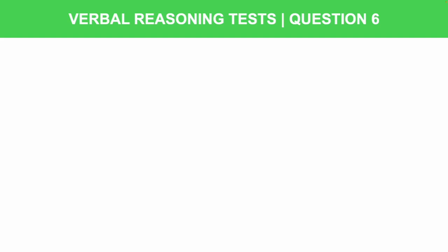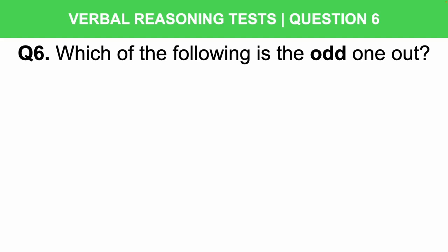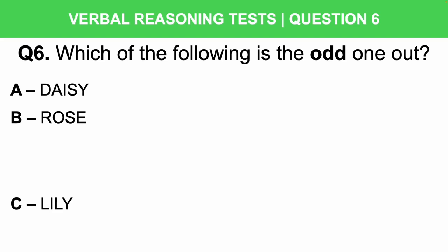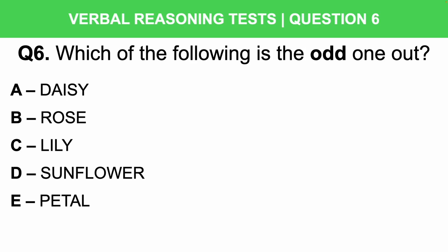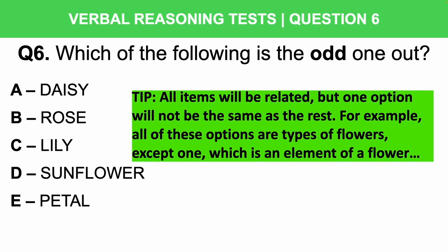Question 6: Which of the following is the odd one out? Is it A: Daisy, B: Rose, C: Lily, D: Sunflower, or E: Petal? All the items here are related, but one is not the same as the rest. All of these options are types of flowers except one, which is an element of a flower. The answer is E: Petal.